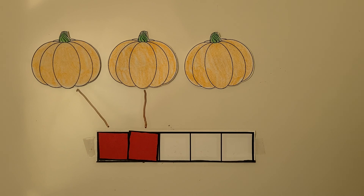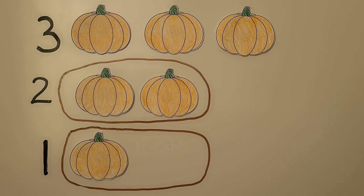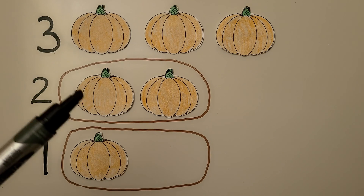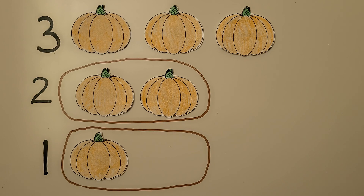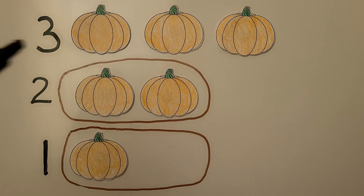Bob could have 2 pumpkins: 1, 2. So if Tala has 3 pumpkins, Bob could have 2 pumpkins. But Bob could also have 1 pumpkin. A set that has fewer counters will have a number that comes first in counting order. 1 and 2 come before 3 in counting order, and there can be more than one answer because 1 and 2 both come before 3.